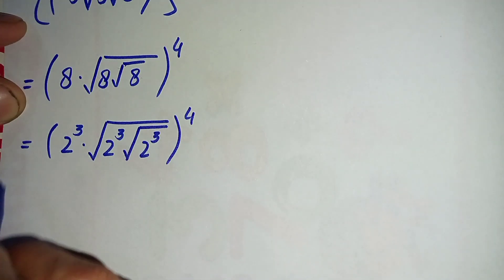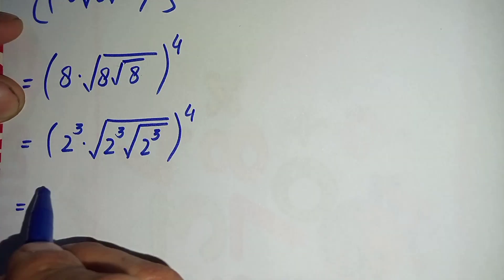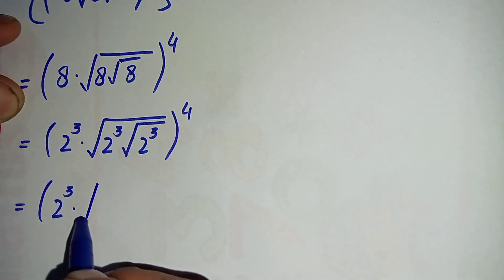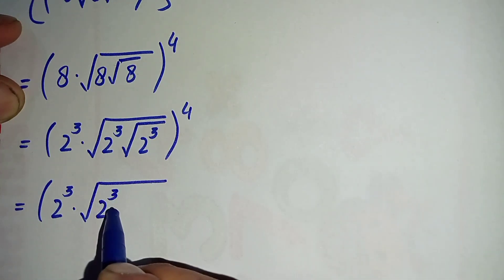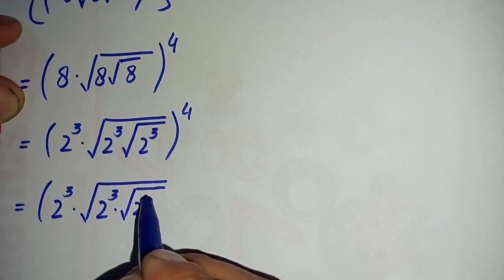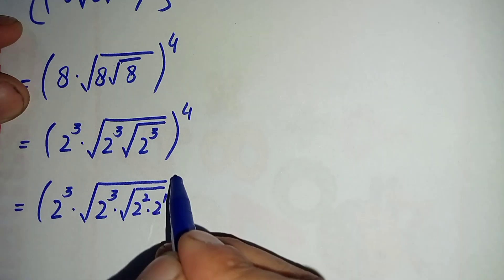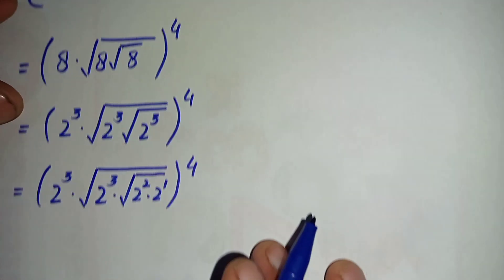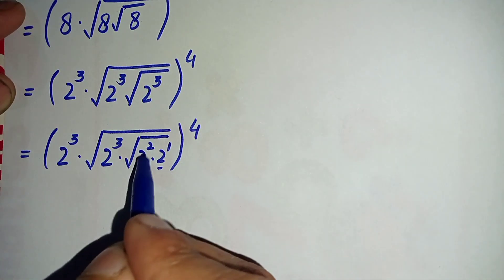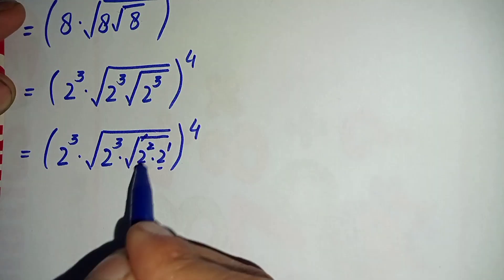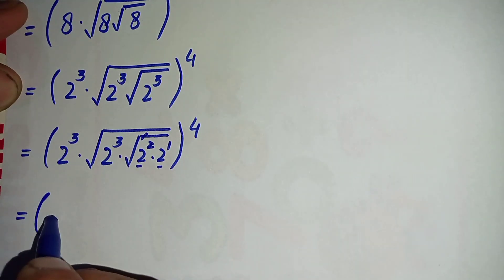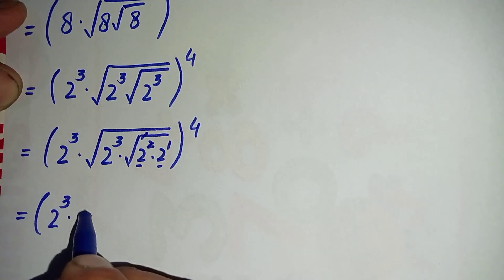This is equivalent to two raised to power three times square root of 8, which is equivalent to two raised to power three times square root of two raised to power three. In the next step we will simplify this square root, so this will become two raised to power three times square root of two raised to power three times square root of two raised to power three, which is the same as two raised to power two times two raised to power one, all raised to power four. We will split this square root over two raised to power two and two raised to power one, so the square and the square root will cancel, leaving only two, and this will become square root of two.